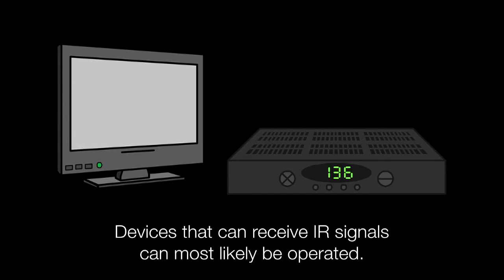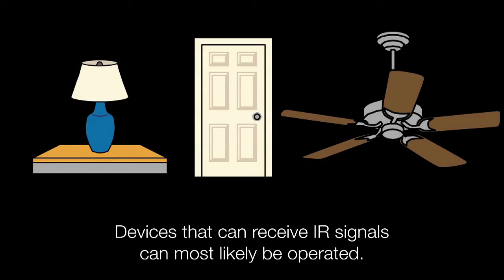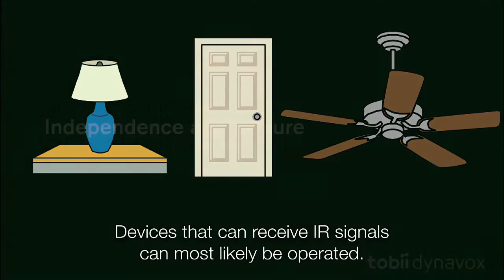The IR Remote Controls available on the i-Series will allow you to operate entertainment devices such as a TV, DVD player, or radio directly from your device. In addition, you can also control environmental devices such as lighting, doors, bed adjustments, and thermostats.